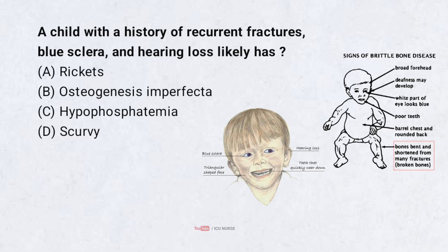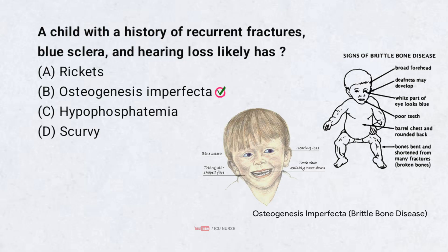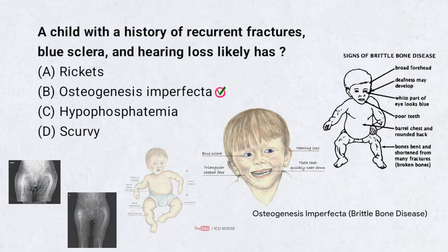A child with a history of recurrent fractures, blue sclera, and hearing loss likely has: A. Rickets, B. Osteogenesis imperfecta, C. Hypophosphatemia, D. Scurvy. Correct answer: B. Osteogenesis imperfecta. Osteogenesis imperfecta is a genetic disorder affecting collagen. This condition causes brittle bones, blue-tinted sclera, and sometimes hearing problems. The condition varies in severity and requires supportive care.